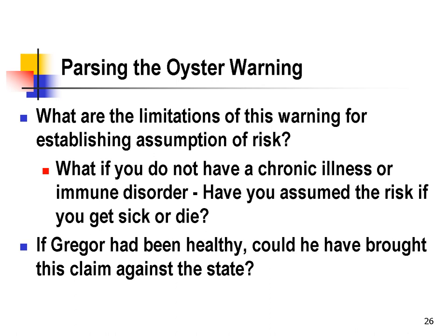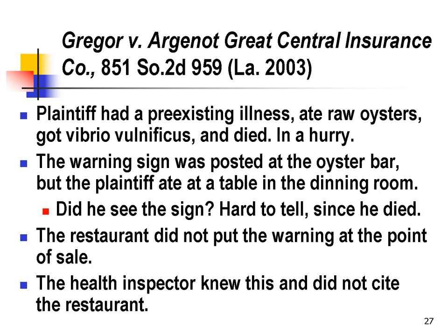So if Gregor had been healthy, it's not clear that he'd have had a claim against the state, because the state duty is really about putting forth this warning to people with chronic illnesses. In this case, the plaintiff did have a pre-existing illness. He ate the raw oysters, he got Vibrio vulnificus, and he died. What's interesting is he died in a hurry — he died so quickly that he either had a massive dose of the Vibrio or he contracted it somewhere else. Maybe he ate a raw oyster earlier in the week — very hard to tell because he's dead.